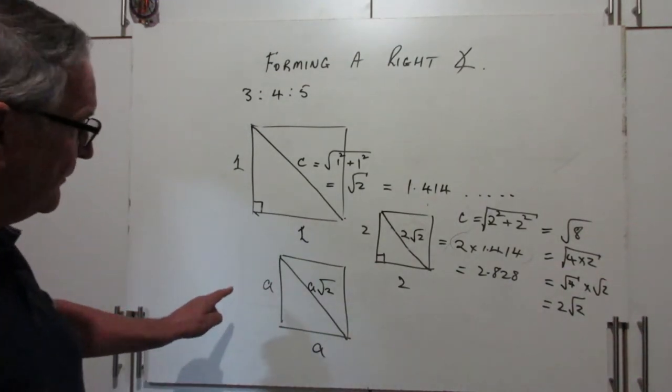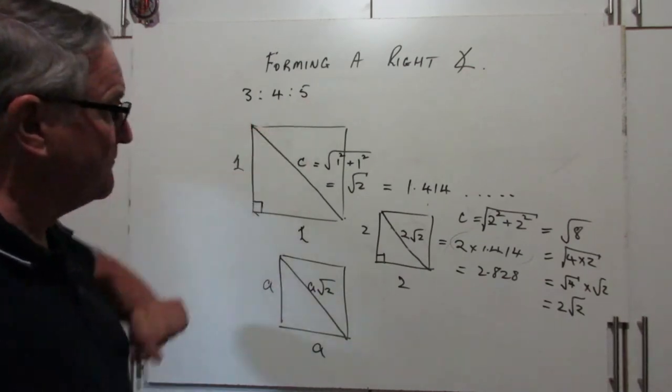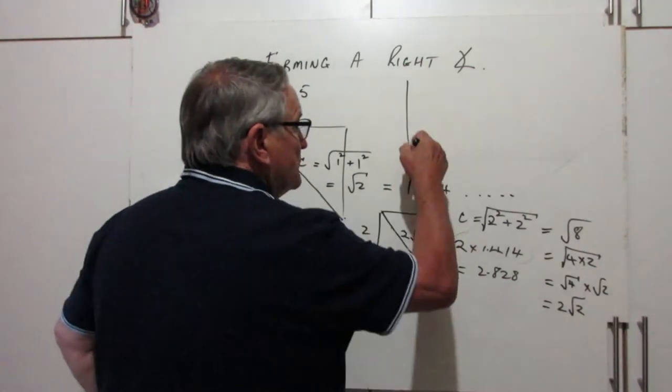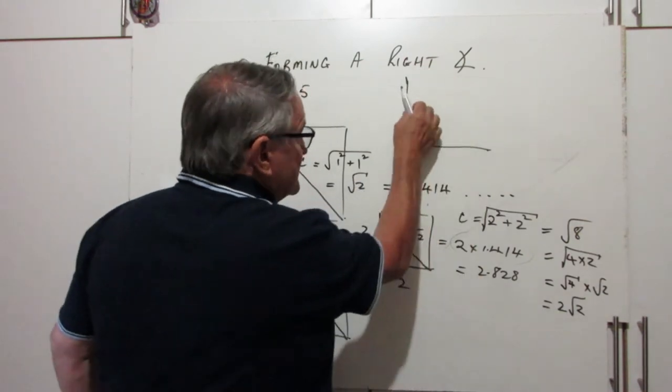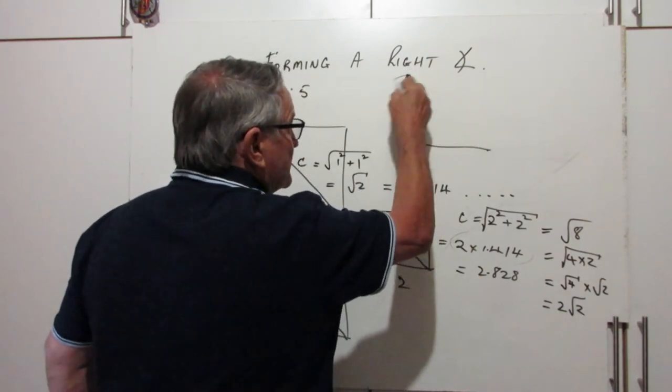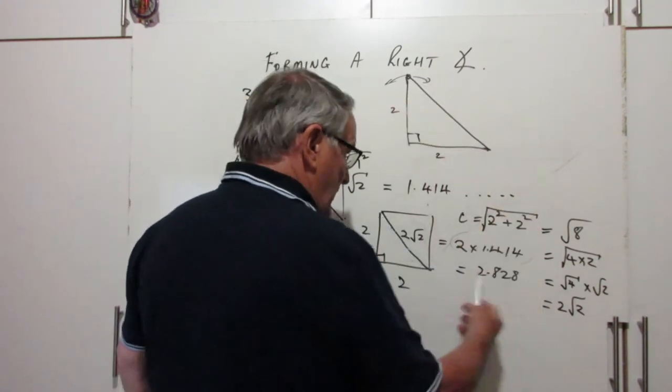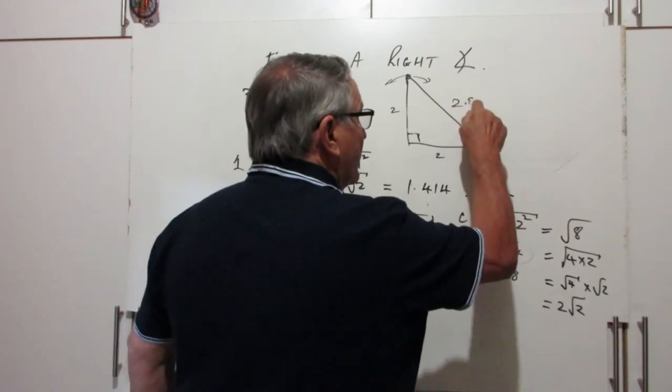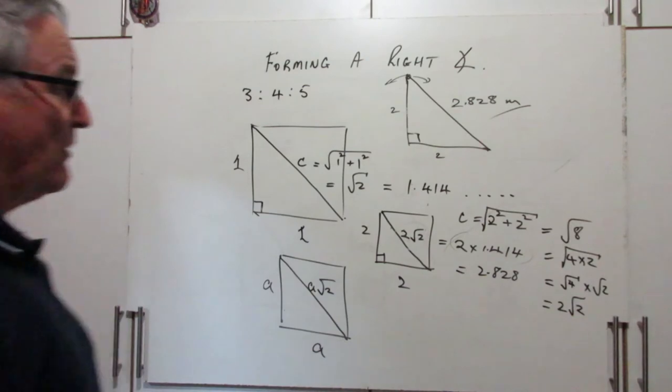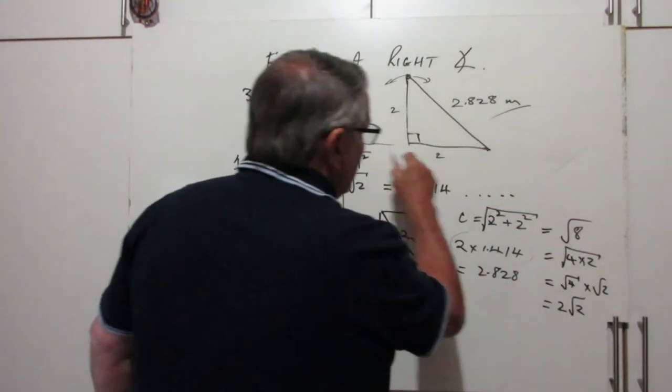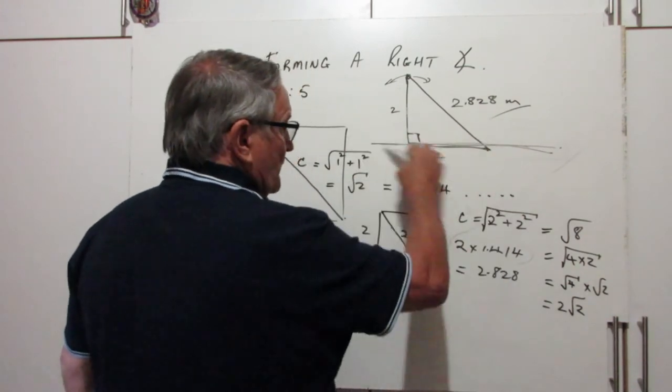This is very handy, because if you don't have 3 meters, 4 meters, 5 meters, but you only have 2 meters and 2 meters, then you can adjust this position here. You can adjust that until that is exactly 2 meters, 2 meters and 2.828 meters to the nearest millimeter, if you want. So, that will give you a 90 degree angle along that edge.